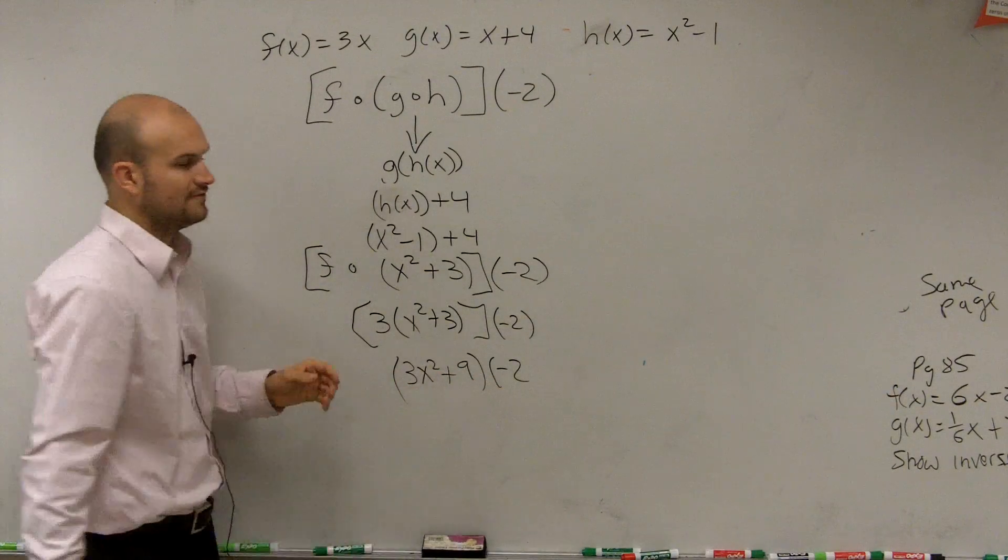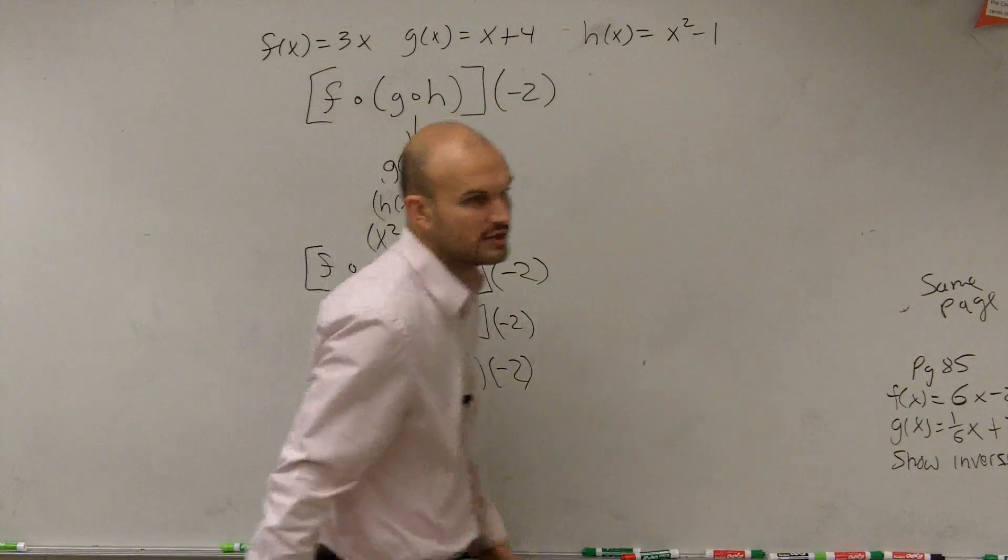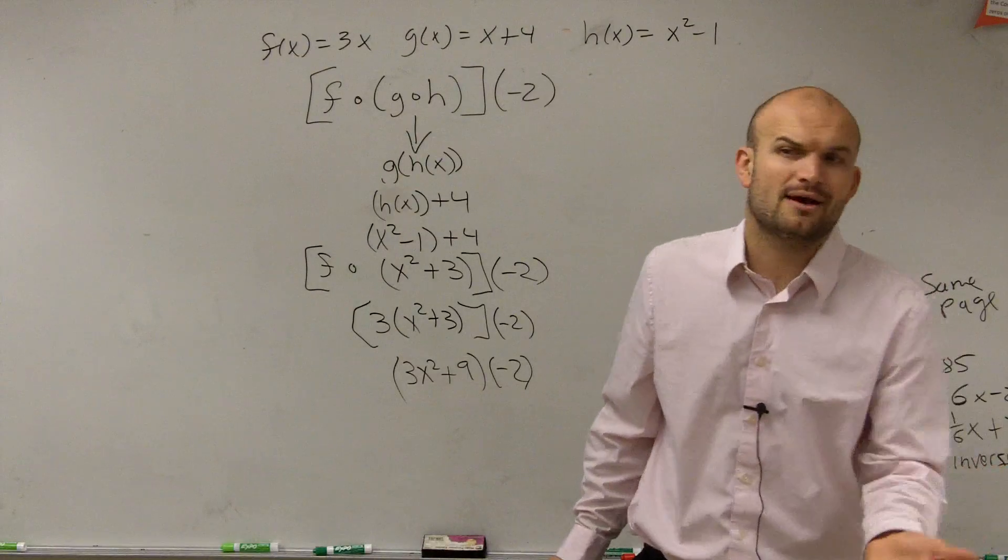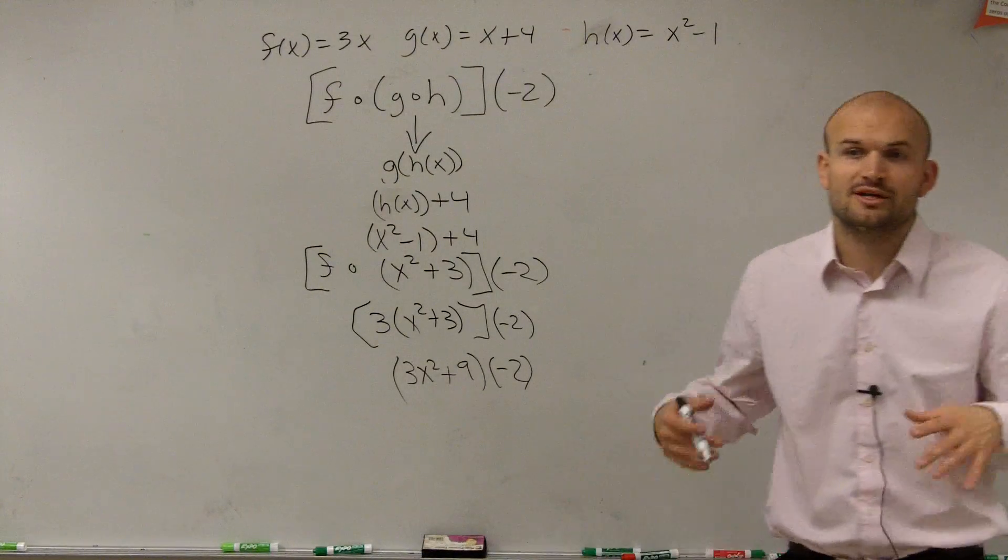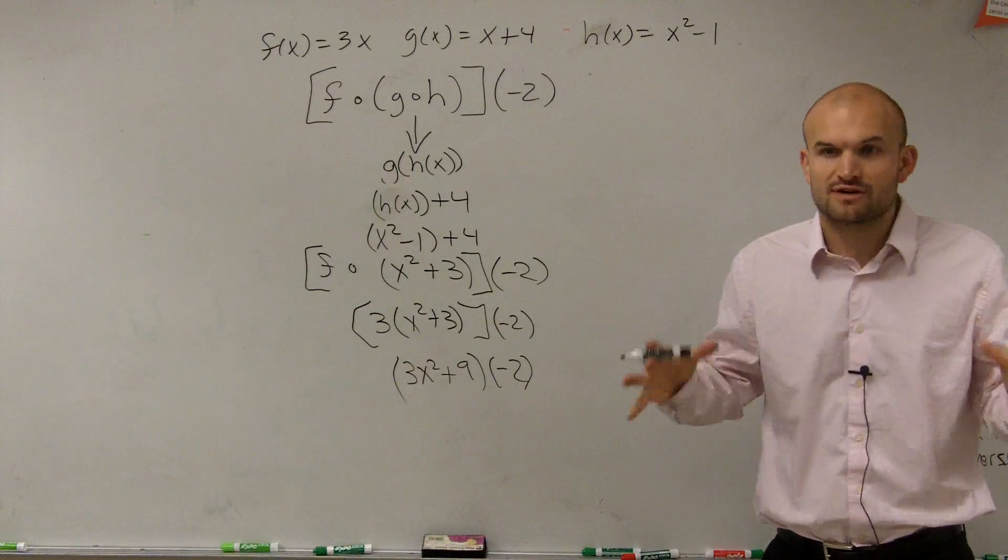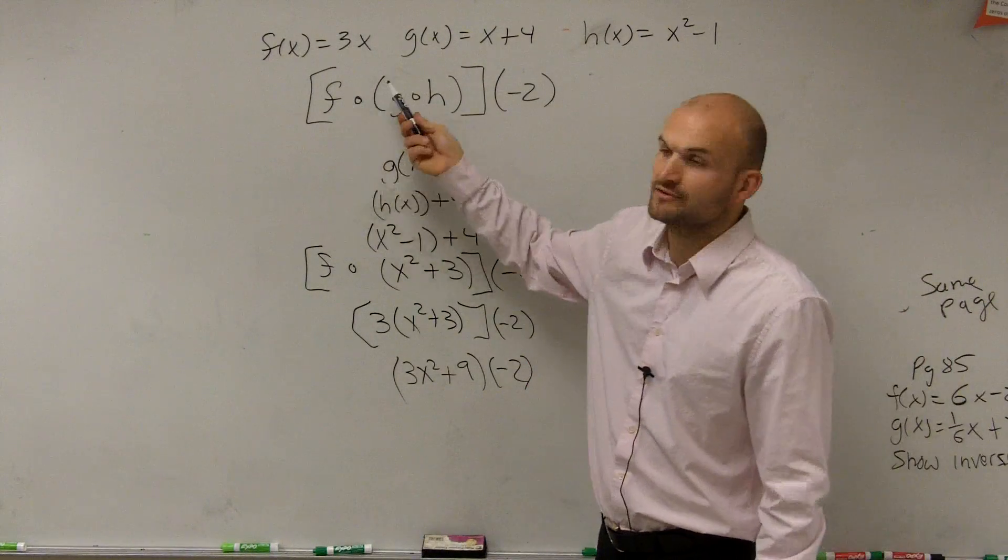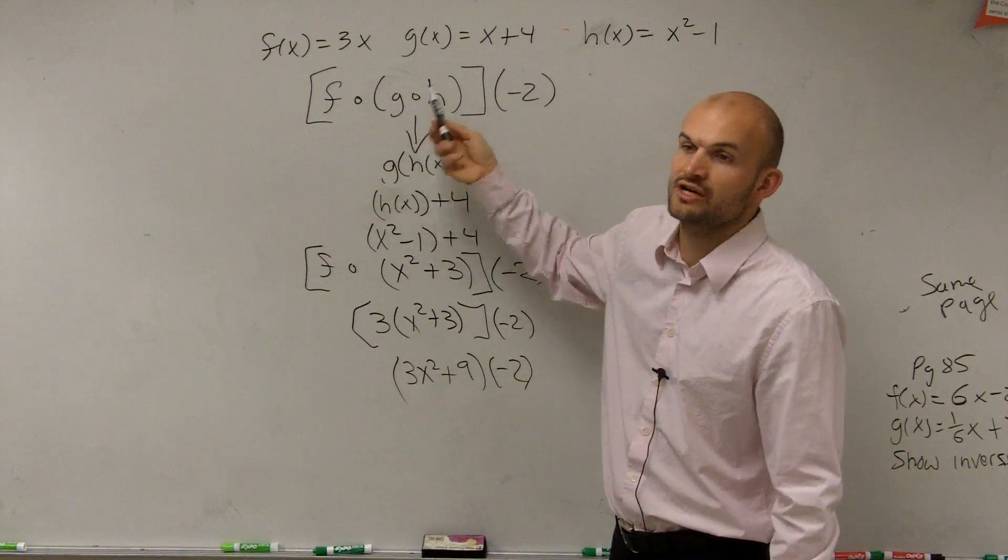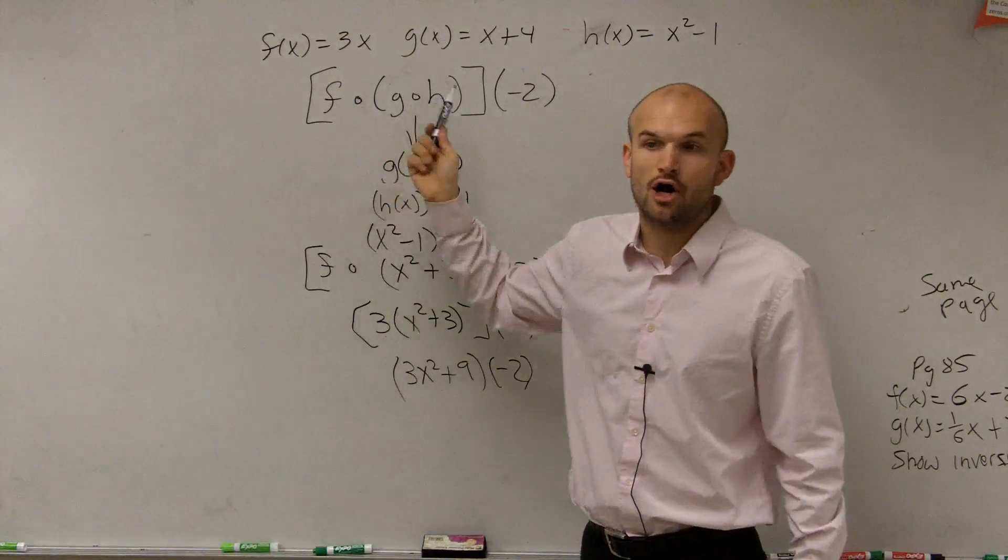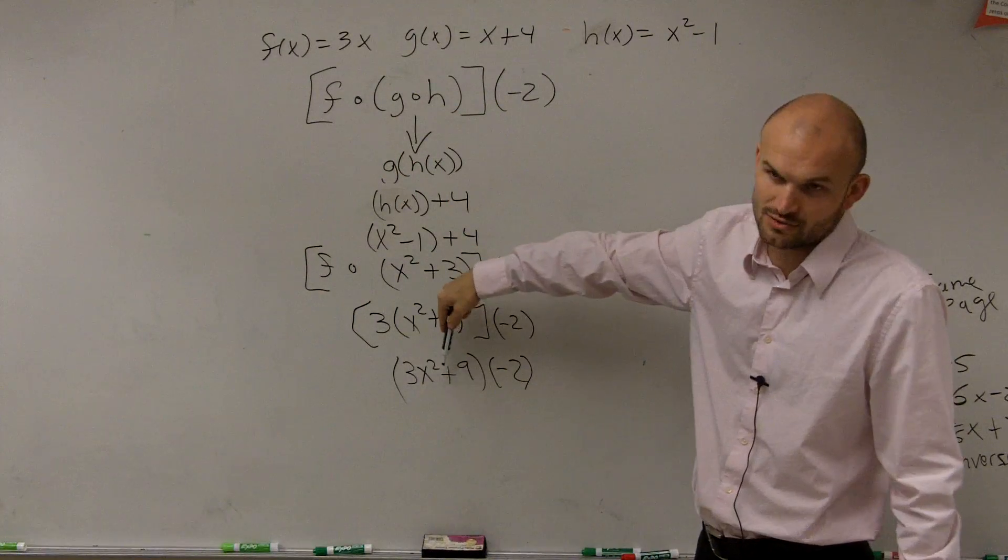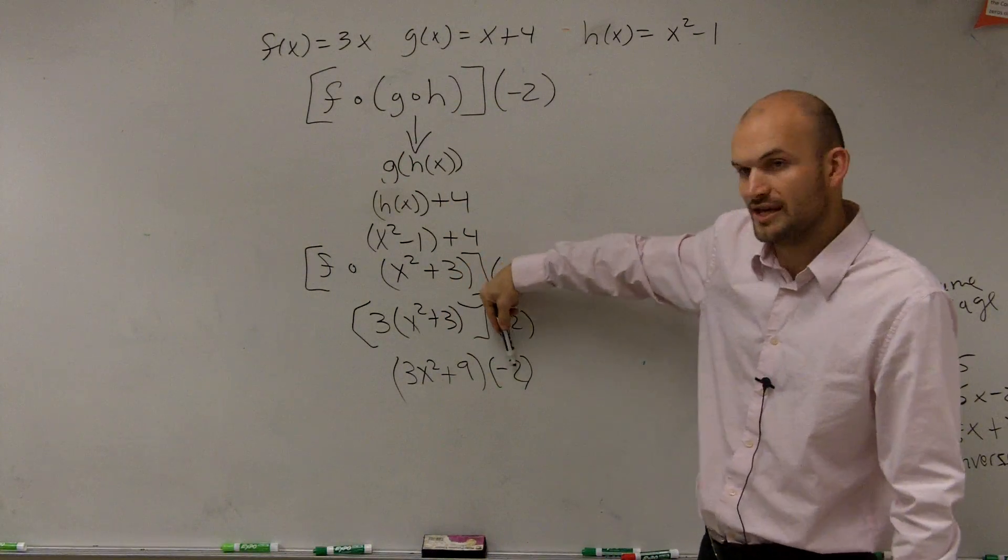And then we have to do all of this. We have to evaluate now for negative 2. So one way that we didn't really go through even in the last class period, you can do all the mathematical stuff first and then evaluate at the end. So now I need to evaluate this function, f of g of h. I need to evaluate all of that, which is 3x squared plus 9, for negative 2.